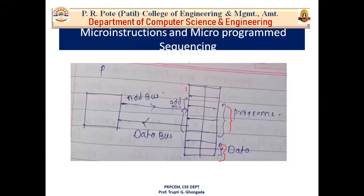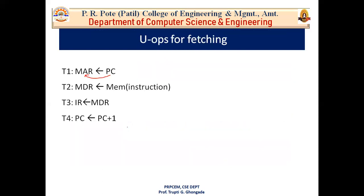Using the MAR, the PC fetches the instruction from the particular memory location. After fetching, via the data bus, the instruction is loaded into the processor — first into the MDR (memory data register). In the third step (T3), the contents of the MDR are loaded into the IR. The address is in the MAR, we fetch the instruction into the MDR, and then transfer that instruction from MDR to IR, since IR always holds the instruction being executed. Now fetching is done, and in step four (T4) the PC is incremented. These four steps are common for every instruction during fetching.